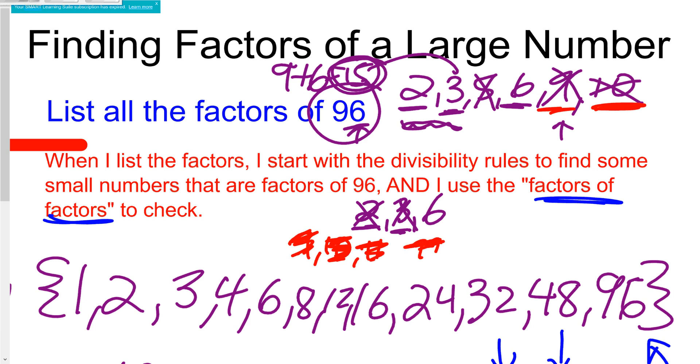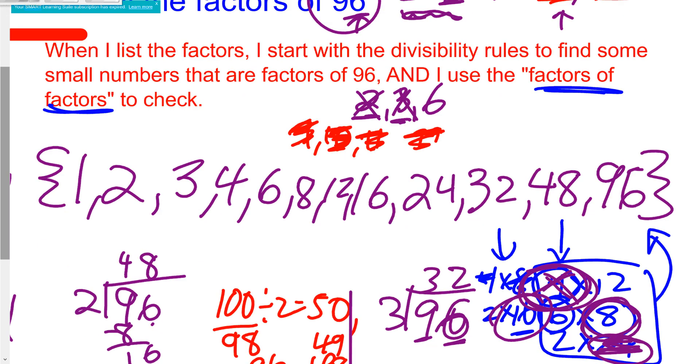So I now have all of my factors: 1, 2, 3, 4, 6, 8, 12, 16, 24, 32, 48, and 96.